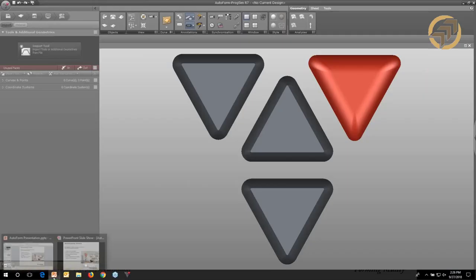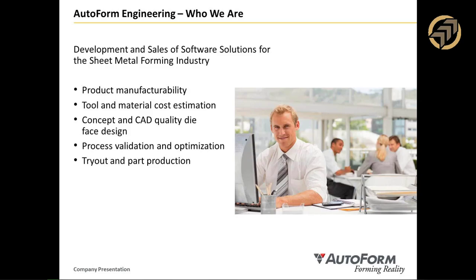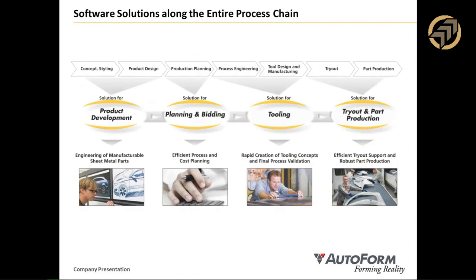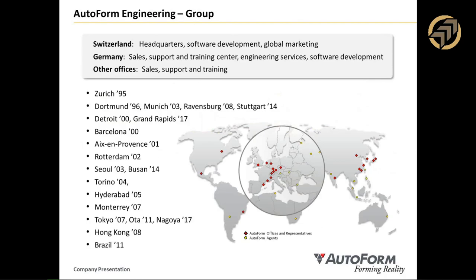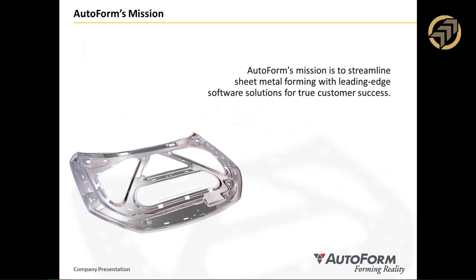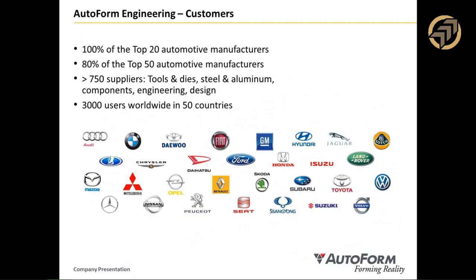Just a quick overview of who we are. Autoform develops and sells software for the sheet metal forming industry. We have products for product manufacturing, tool and cost estimation, concept, process validation, optimization, and tryout. Basically, we offer a suite of software that takes anything from your product development and supports you all the way through to your tryout needs. Our company is headquartered in Switzerland but we have sales and training offices throughout the world. We're in all of the major OEMs, 750 suppliers, tool shops, steel and aluminum component design, with over 3,000 users in 50 countries worldwide.